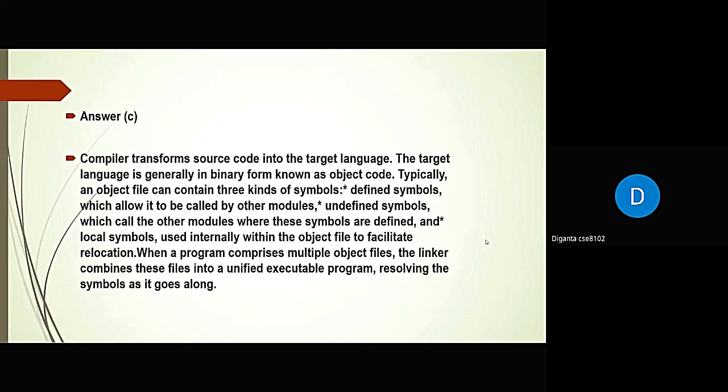An object file can contain three kinds of symbols: defined symbols, which allow it to be called by other modules; undefined symbols, which call other modules where the symbols are defined; and local symbols, used internally within the object. The linker combines the files into a unified executable program, resolving symbols as it goes along.